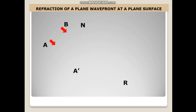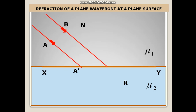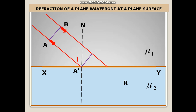Now let us discuss refraction of a plane wavefront at a plane surface. This is the denser medium. The rarer medium has refractive index mu1. The denser medium has refractive index mu2. XY is the refracting surface. These two are the rays of light. AB is the incident wavefront. A dash over here will start refracting. A dash N is the normal. This is the angle of incidence between the incident ray and the normal.